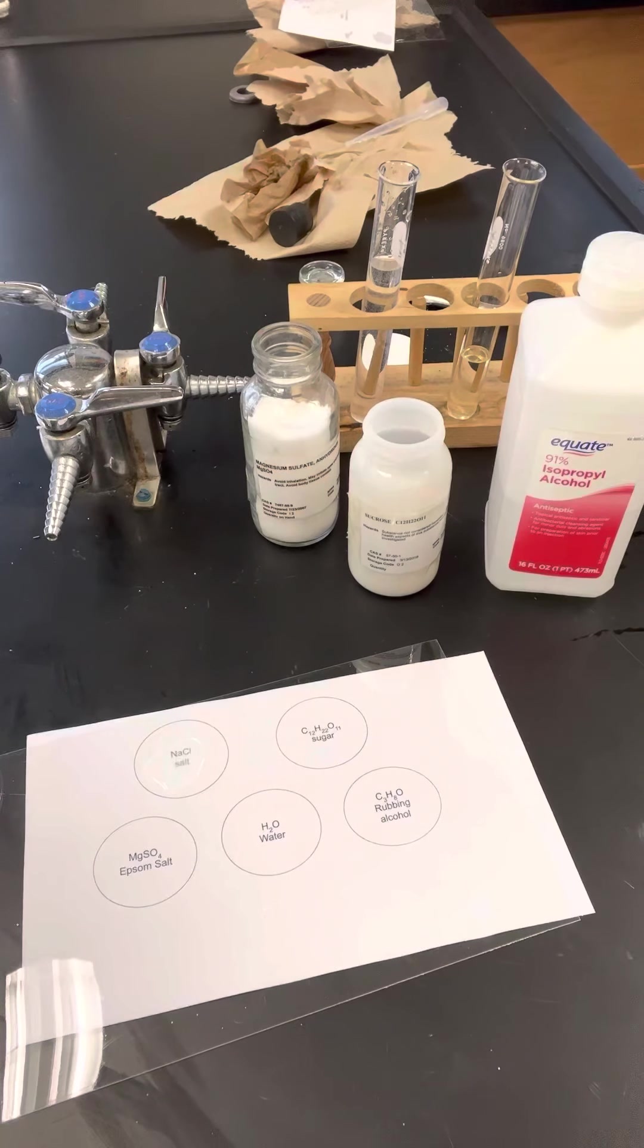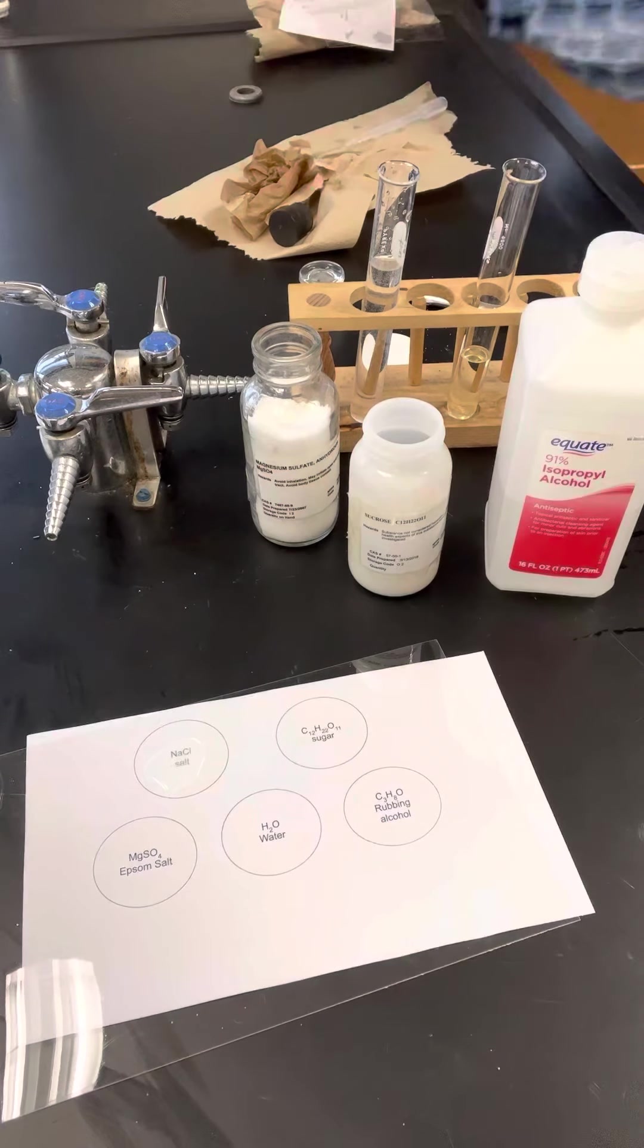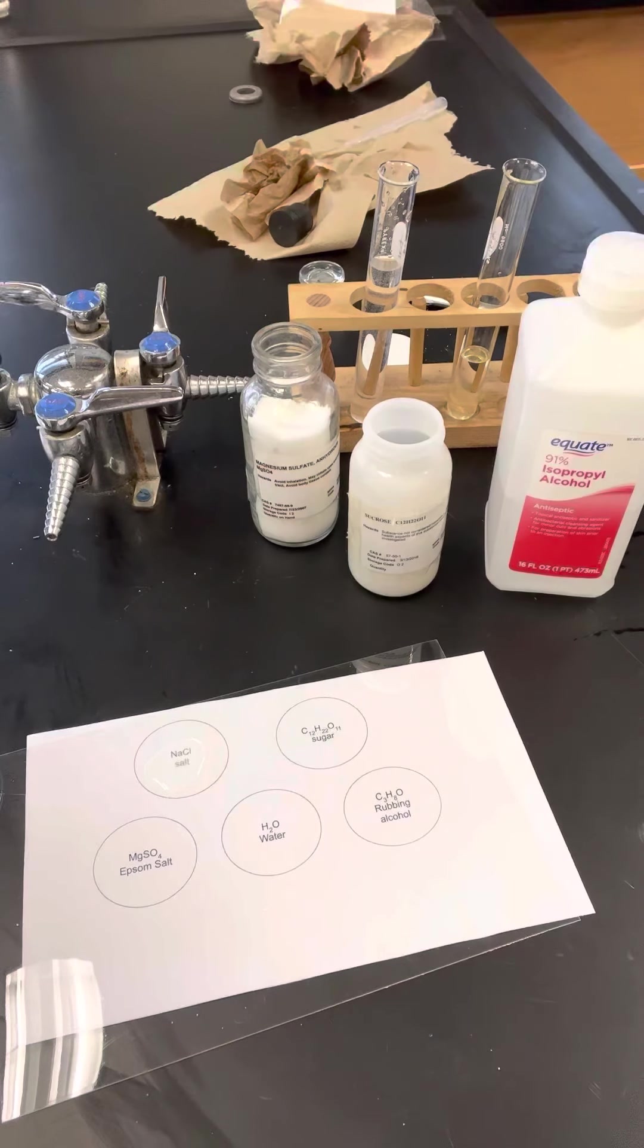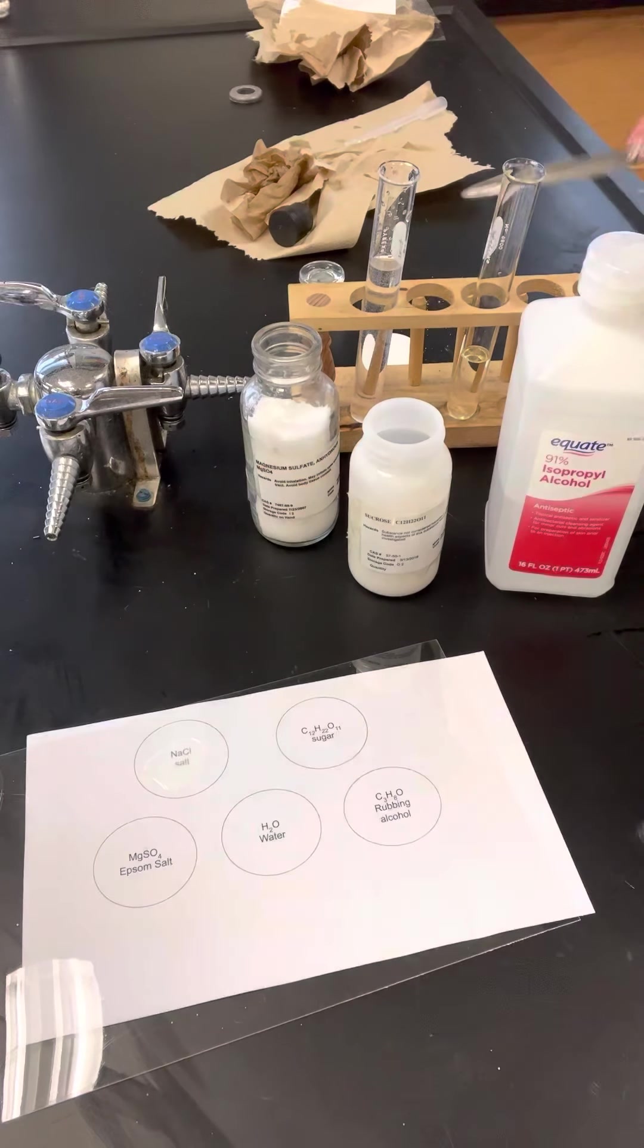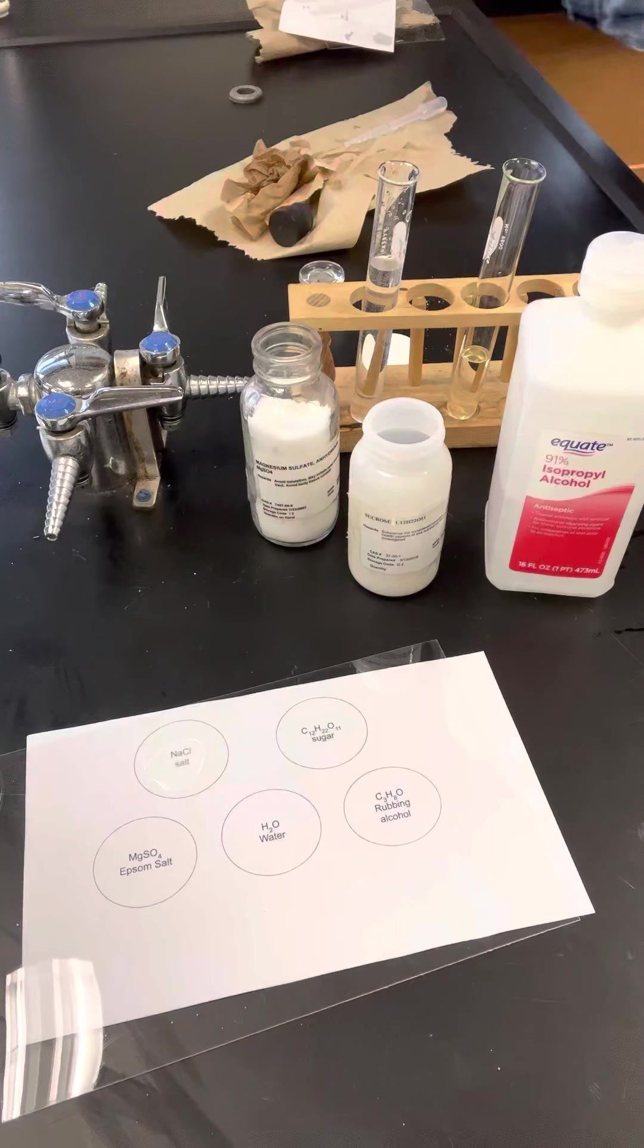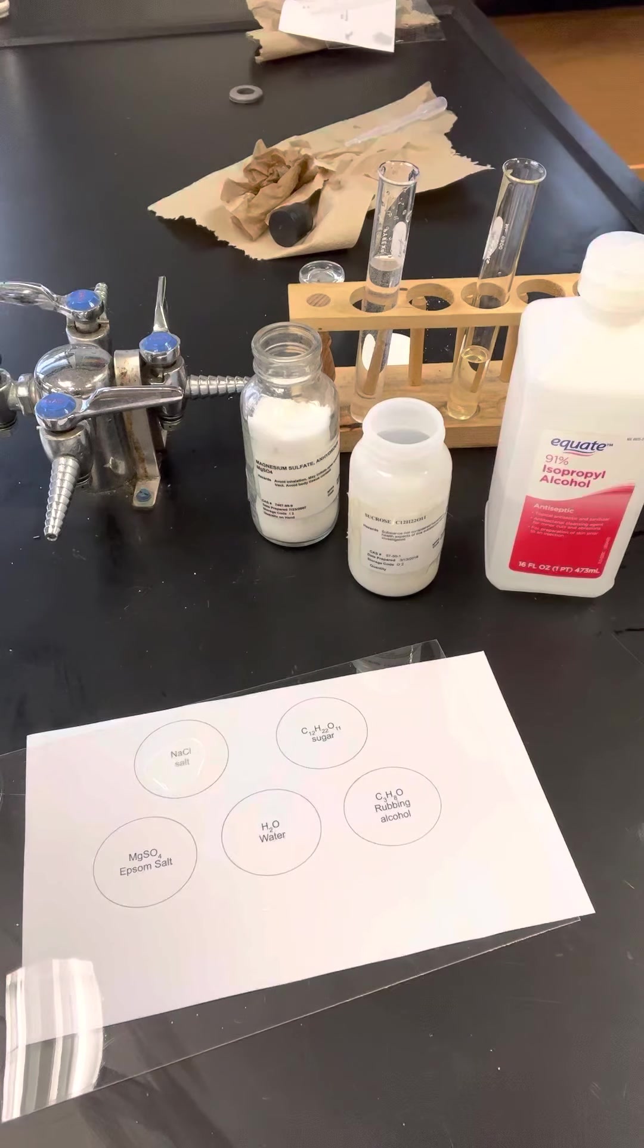I'm going to give the metal tips of the tester a rinse in water so it doesn't contaminate the next sample, and I'm going to do the same for my scoop or spatula. Now I can test the next solid, which is sucrose or sugar. I put a scoop there, that's about enough.